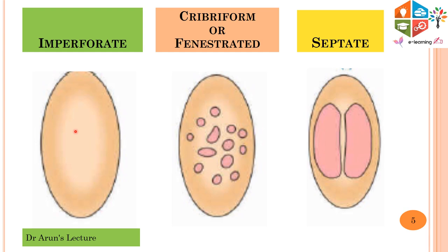Conditions like hematocolpos and hematometra can occur. In the case of a cribriform or fenestrated type of hymen, we have multiple small perforations — small openings. Here the menstrual blood flow and other fluids can leave out without any problem.